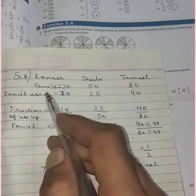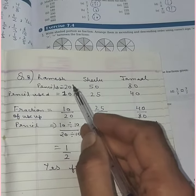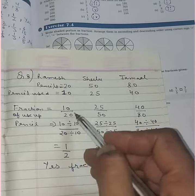Ramesh had 20 pencils, he used 10, so the fraction is 10 out of 20 - 10 will be above 20.